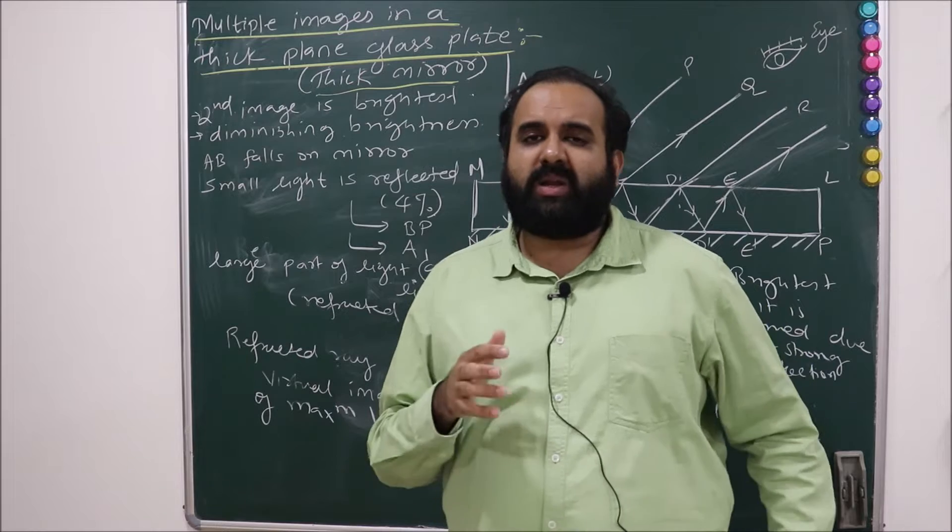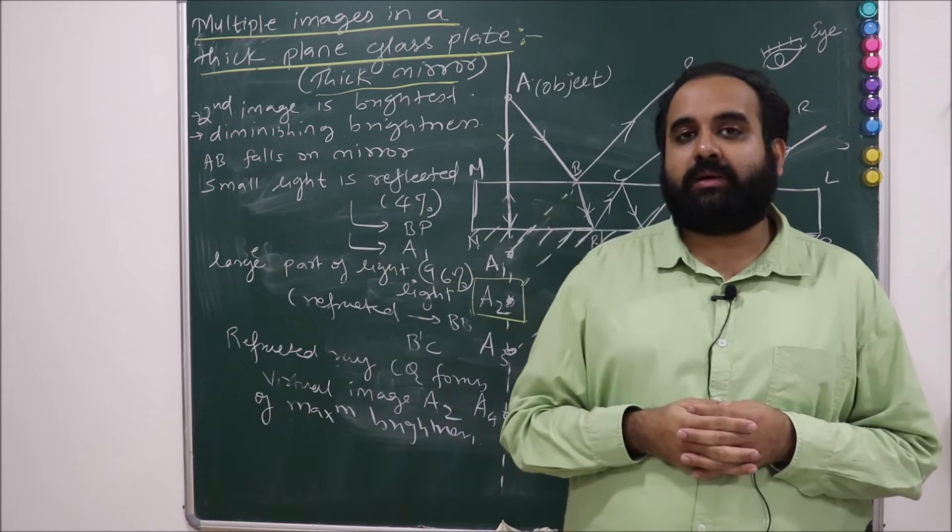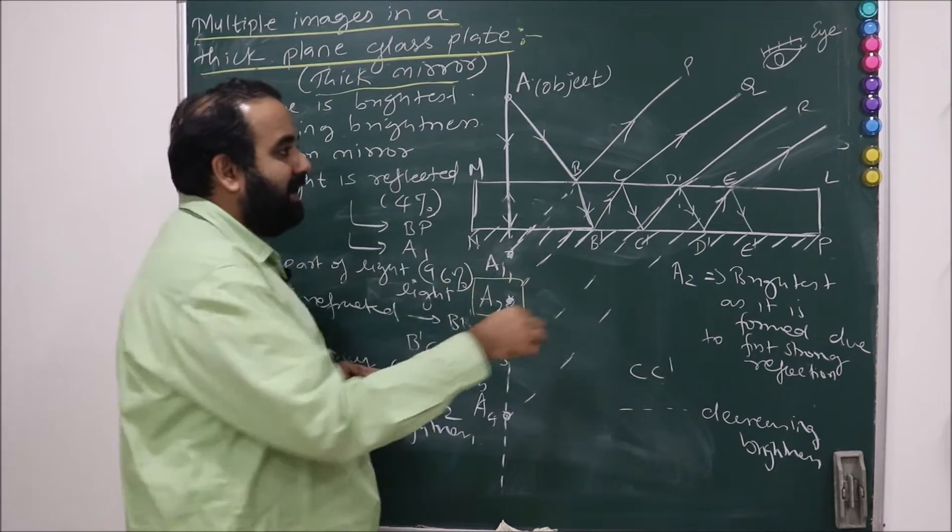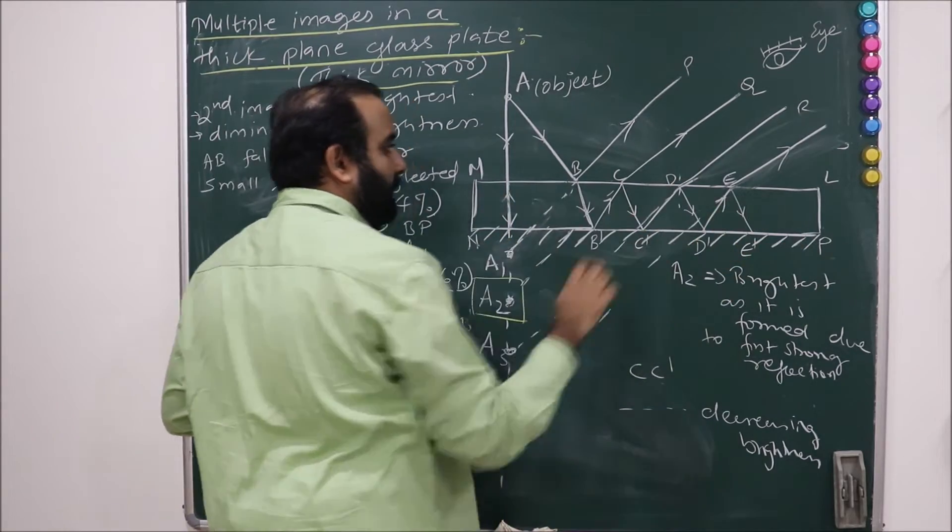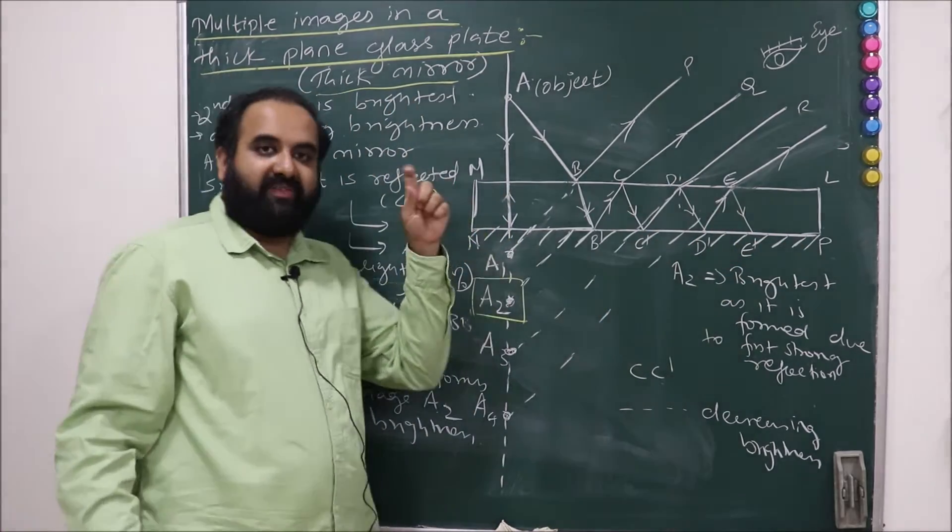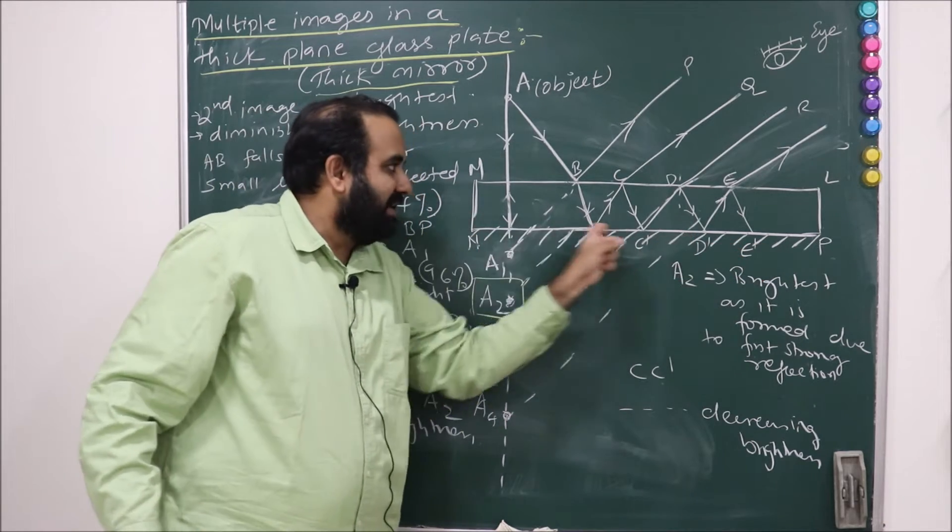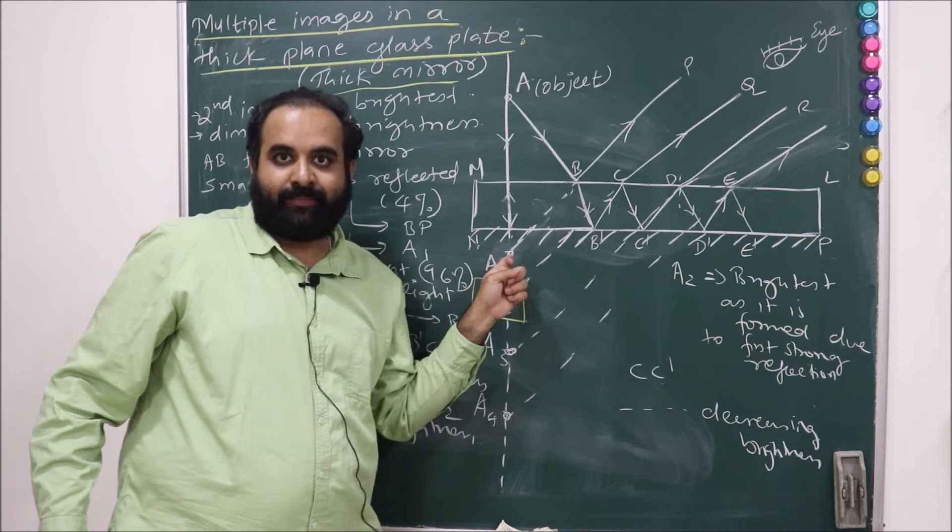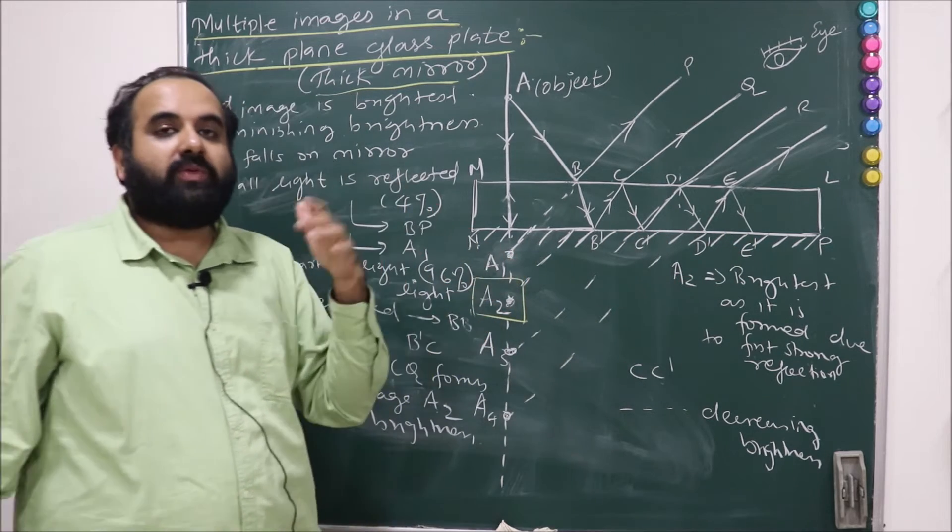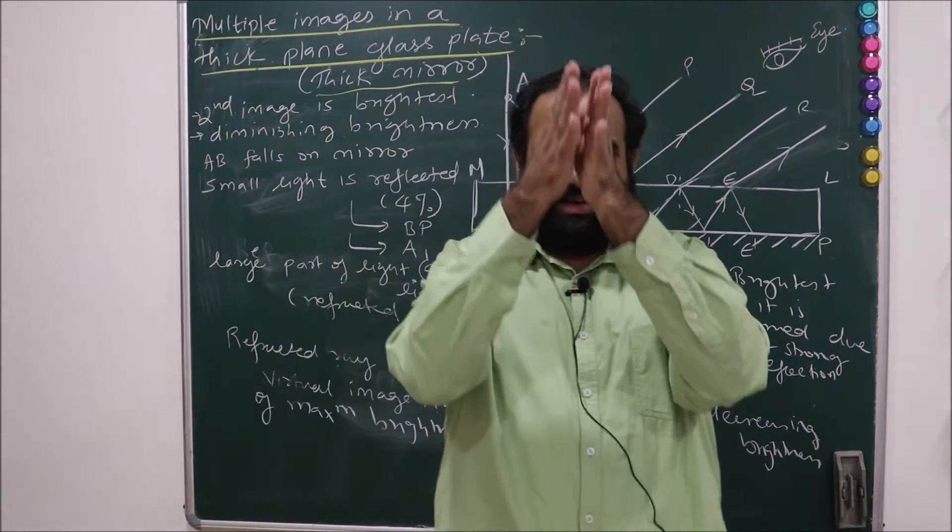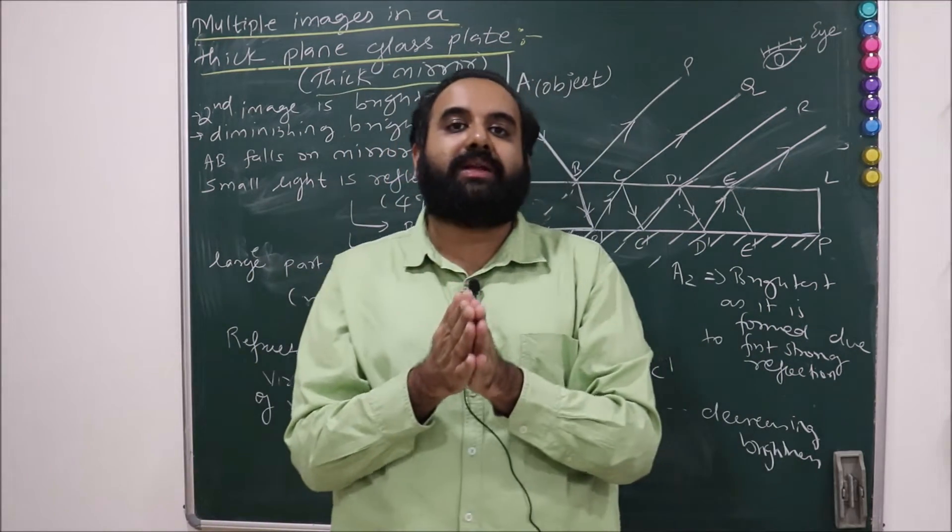Either because, see, first let's see how it's made. This is LMNP. I have taken a thick glass slab and one end of this, that is NP, the silvering has been done over here. Are you understanding this? So we all know how a mirror is made. We take a thin glass sheet - if you've seen a mirror at your home, it's a very thin glass sheet.